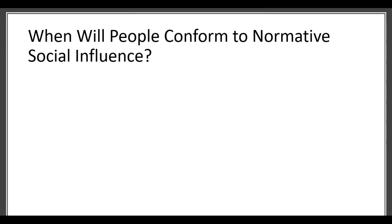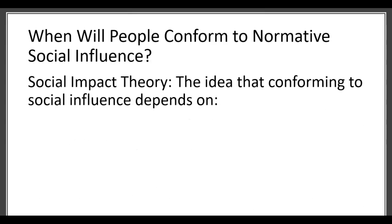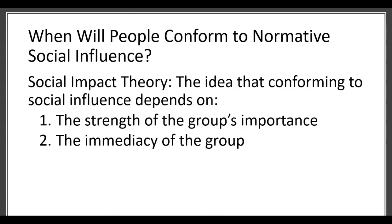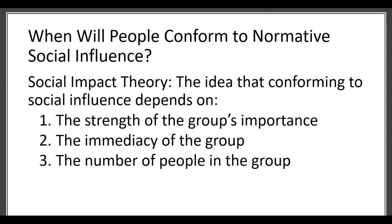Let's review when people will conform to normative influence. One connected theory is social impact theory, from Latané's work in the eighties. The idea is that social influence depends on specified factors: how strong the group is in terms of its importance to us, how immediate the group is, and the number of people in the group.